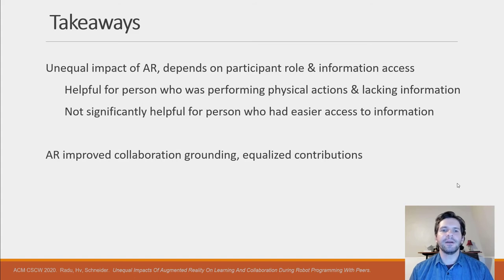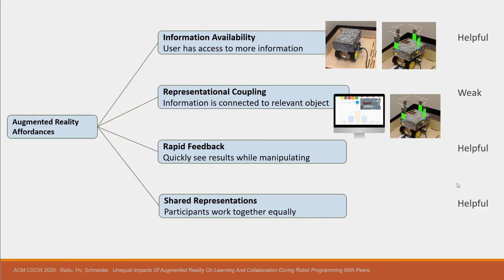However AR improved grounding and equalized contributions between participants. Reflecting on the affordances of augmented reality, the study findings suggest that when a user had more information available to them they benefited, but when information was tied to physical objects this was not useful for the computer user who could access this information either on the computer screen or on the robot depending on the study condition.